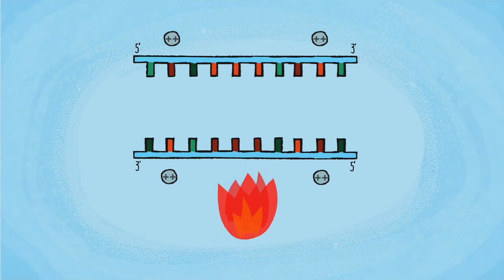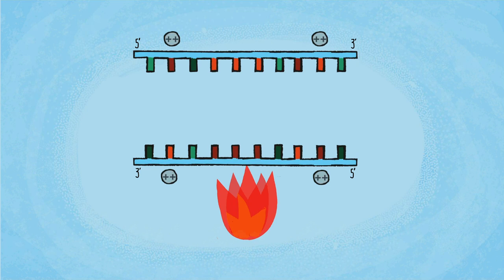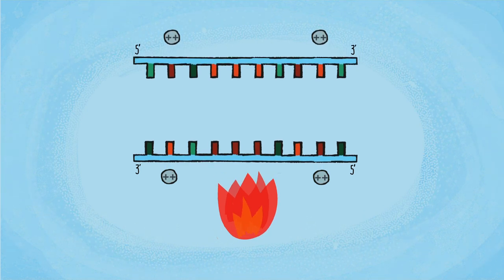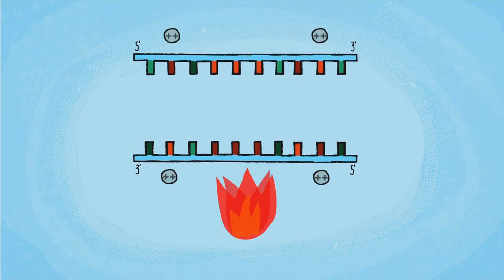This reduces the repulsion between the two strands, thus stabilizing the base pairing and affecting the melting temperature at which the strands denature.